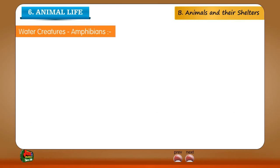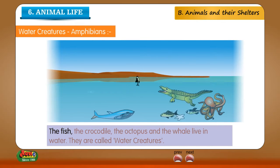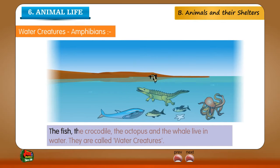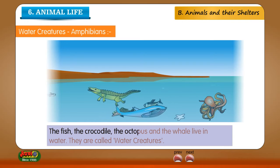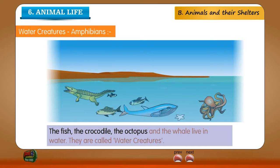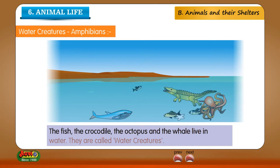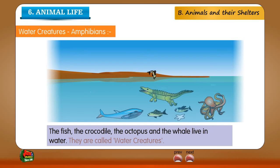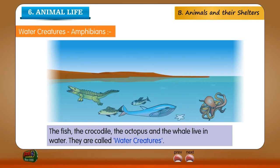Water creatures: the fish, the crocodile, the octopus and the whale live in water. They are called water creatures.